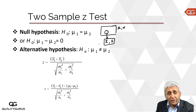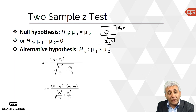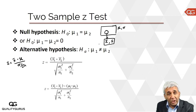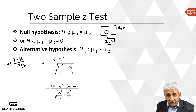The alternate hypothesis is that the means are not the same. Recalling what we did earlier, we calculated Z as X-bar minus mu divided by sigma divided by square root of n. Here also, when looking at two samples, we need to find a Z calculated value and then compare it with the Z critical value, just like we have done in all other cases. The difference lies in how we calculate the Z value.